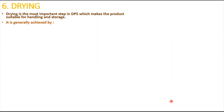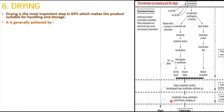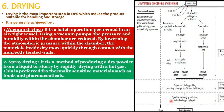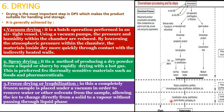The sixth and final step is drying, the most important step in downstream processing, which makes the product suitable for handling and storage. It is achieved by three types: vacuum drying, spray drying, and freeze drying (lyophilization). Vacuum drying is performed in airtight vessels using vacuum pumps; pressure and humidity within the chamber are reduced so that material dries more quickly through contact with indirectly heated walls.